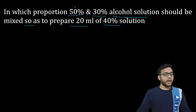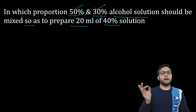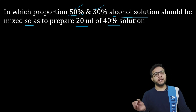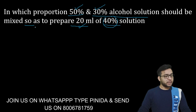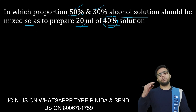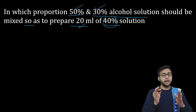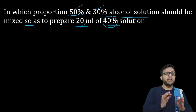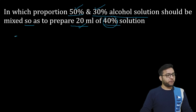यहाँ पर पूछा गया है कि 50% का और 30% का कितना proportion लें — कितने ml लें 50% का और कितने ml लें 30% का — जो हमें 20 ml मिल जाए और 40% होनी चाहिए उसकी strength। चलिए इसको solve करते हैं। जभी भी numerical solve करते हैं, डरना नहीं है। Values को पहले समझना है और given लिखना है। यहाँ पर पहले 50% और फिर 30% given था।